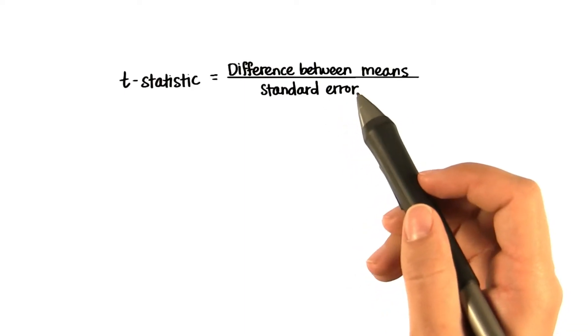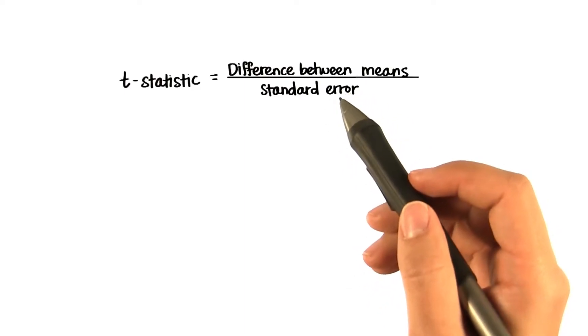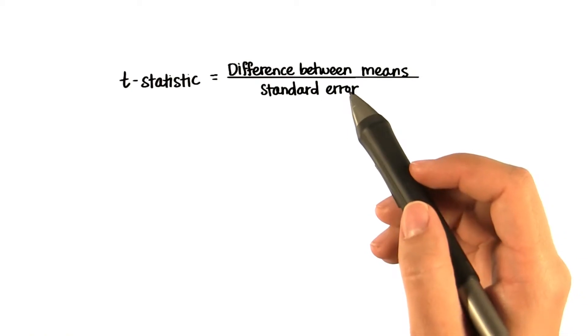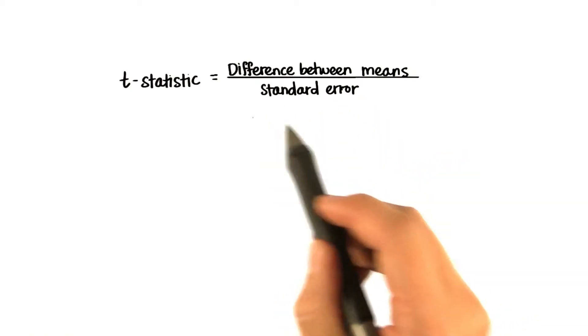However, the standard error changes because it's based on two sample sizes and two standard deviations. What is this new standard error?